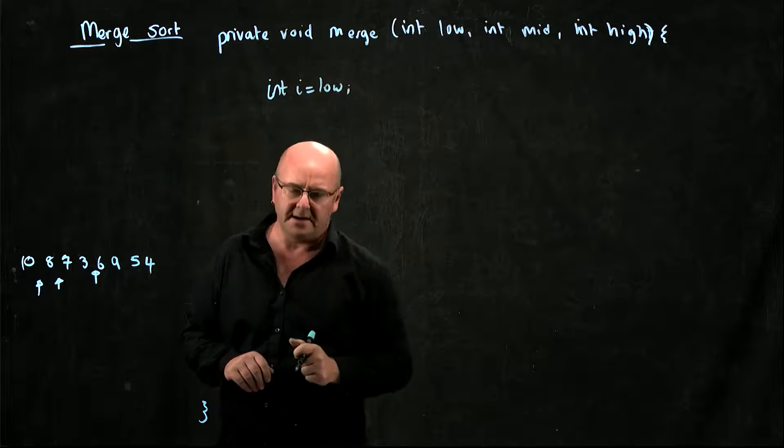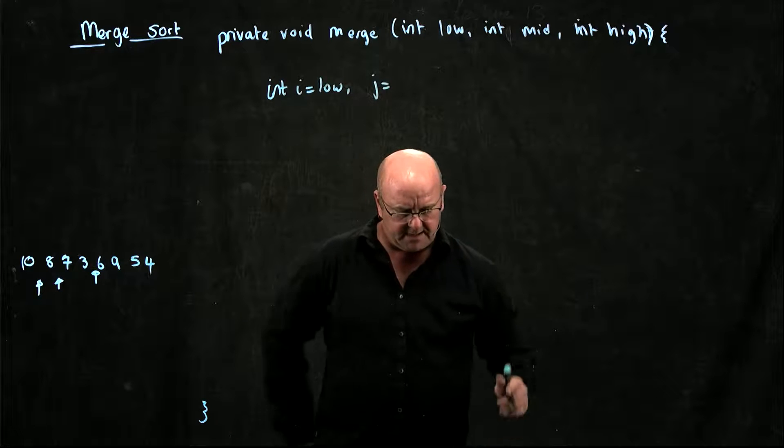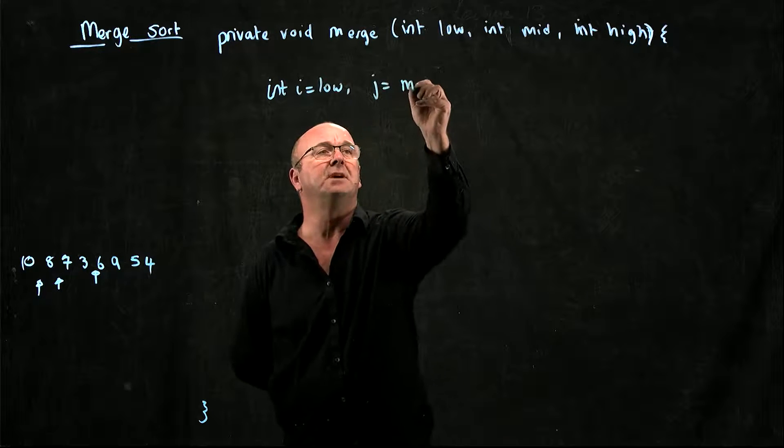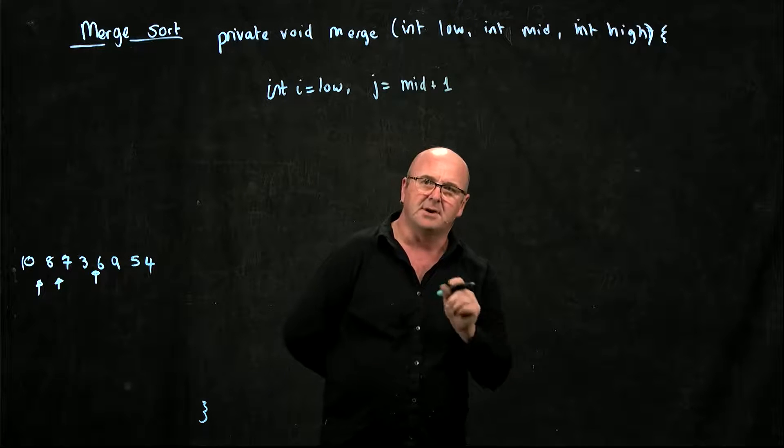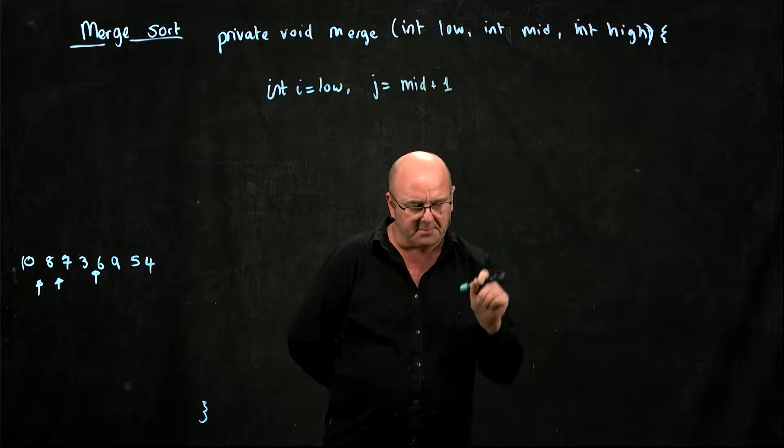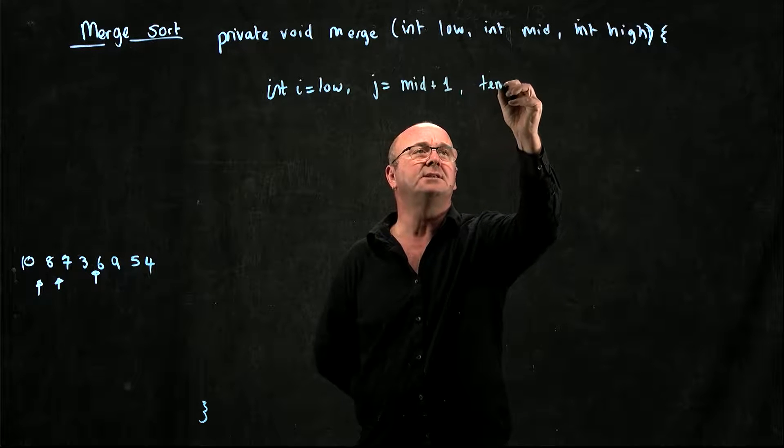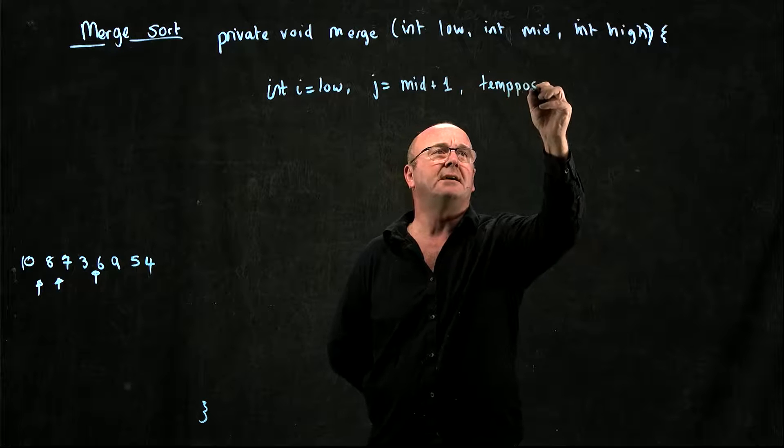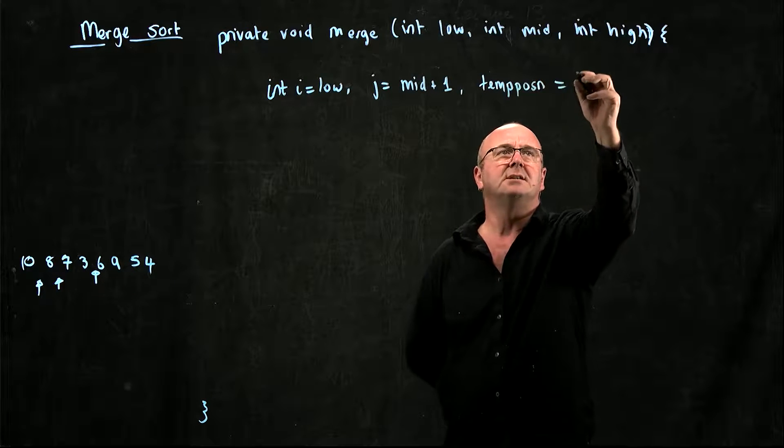With an index at low and index j, which is going to be at mid plus 1, because we don't want to start actually at mid. We're going to go up to mid, and then we're going to go from mid plus 1 up. And then we're going to have a temporary pointer for our temporary array. So I've called that temp position, which is low.